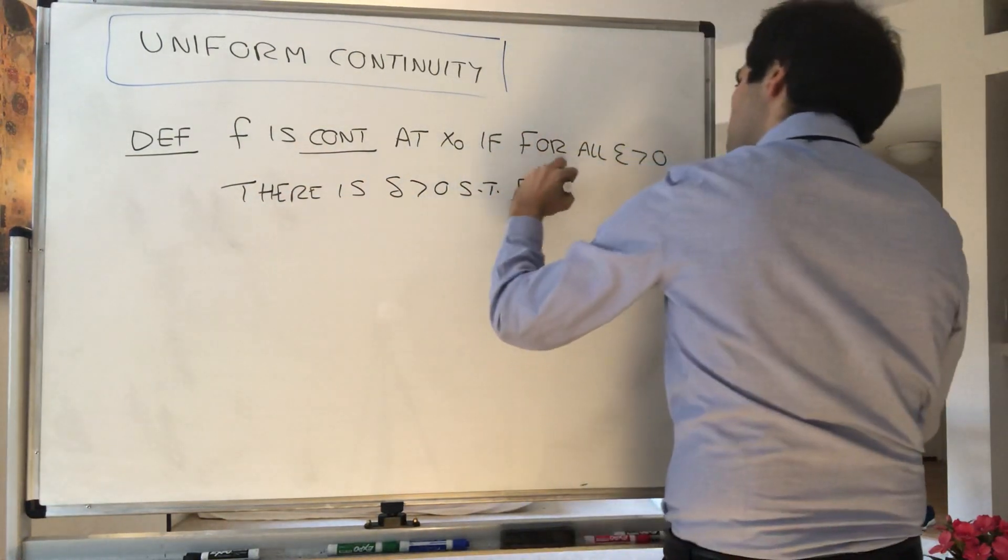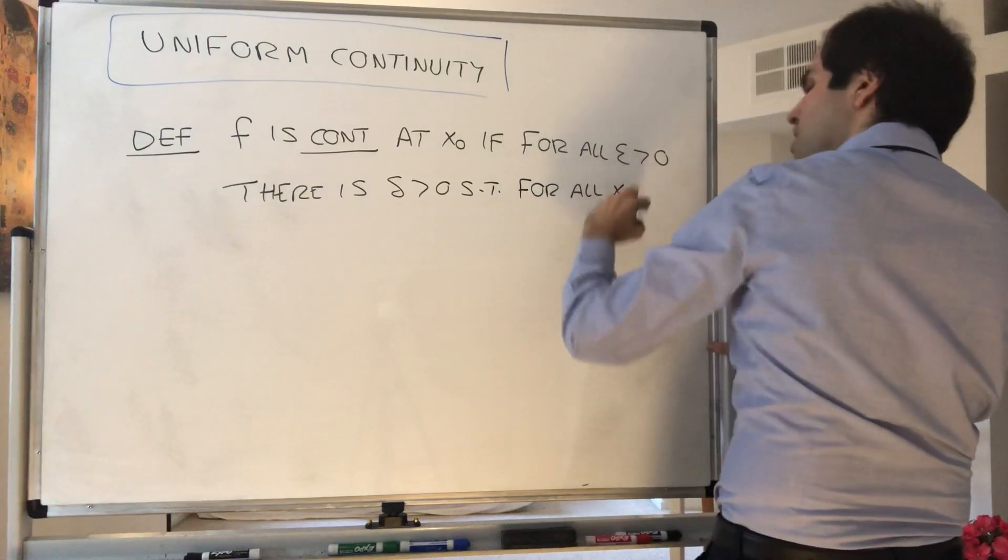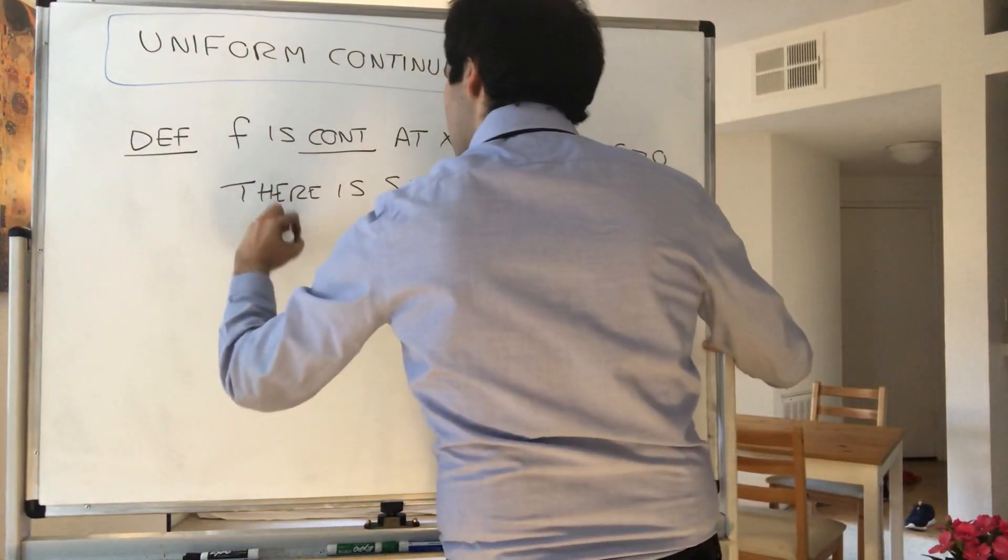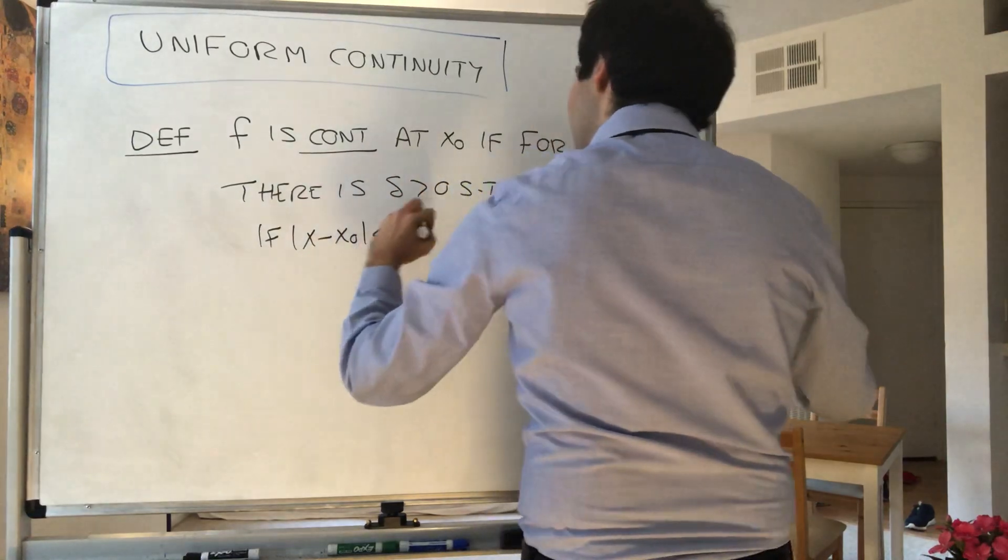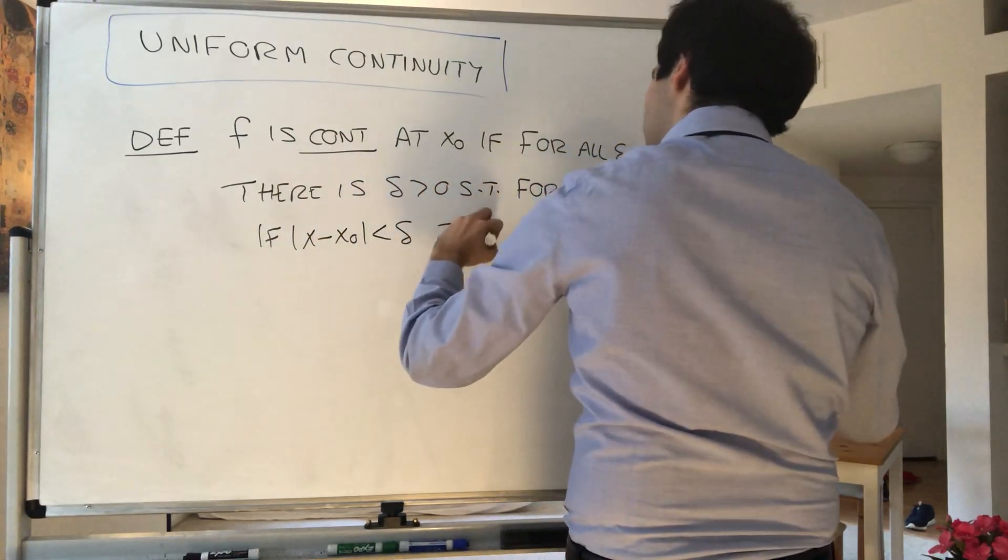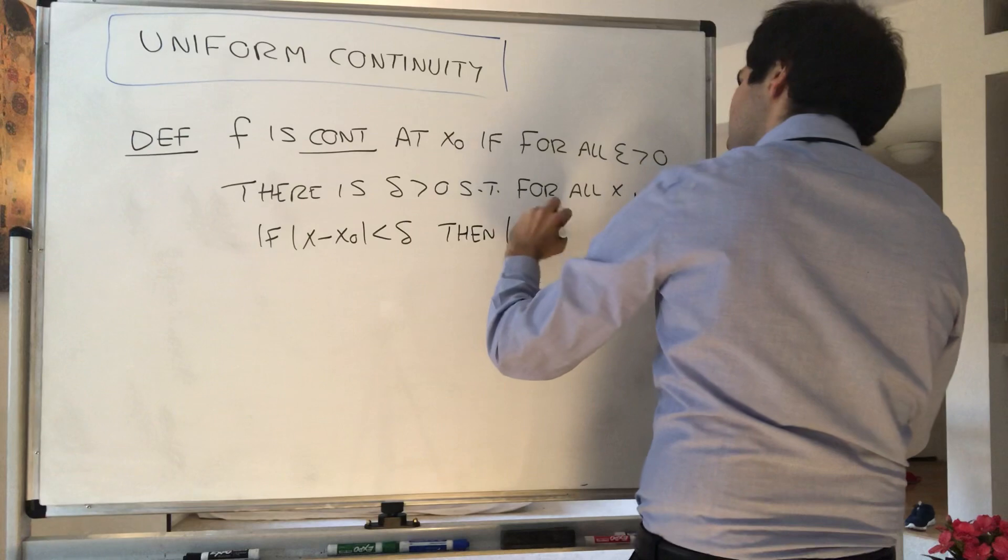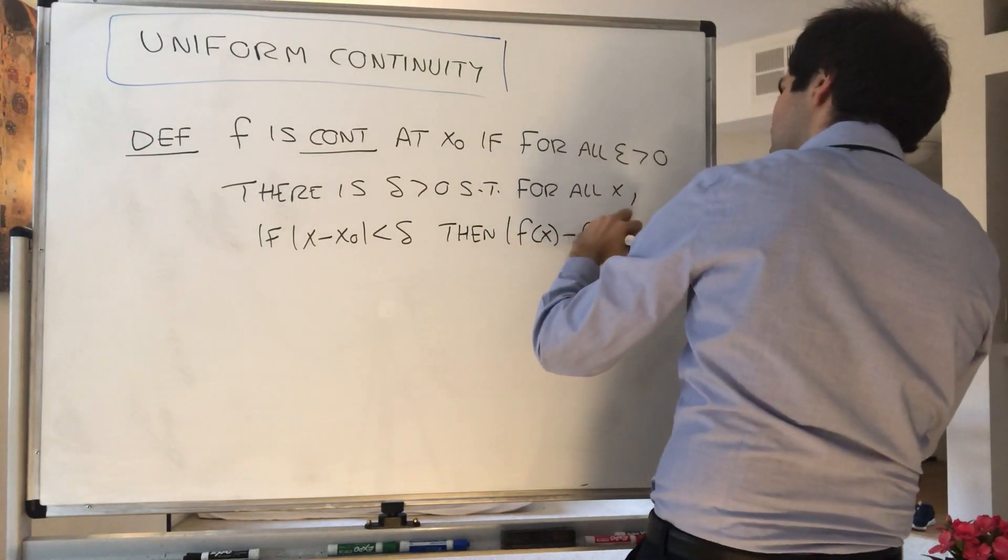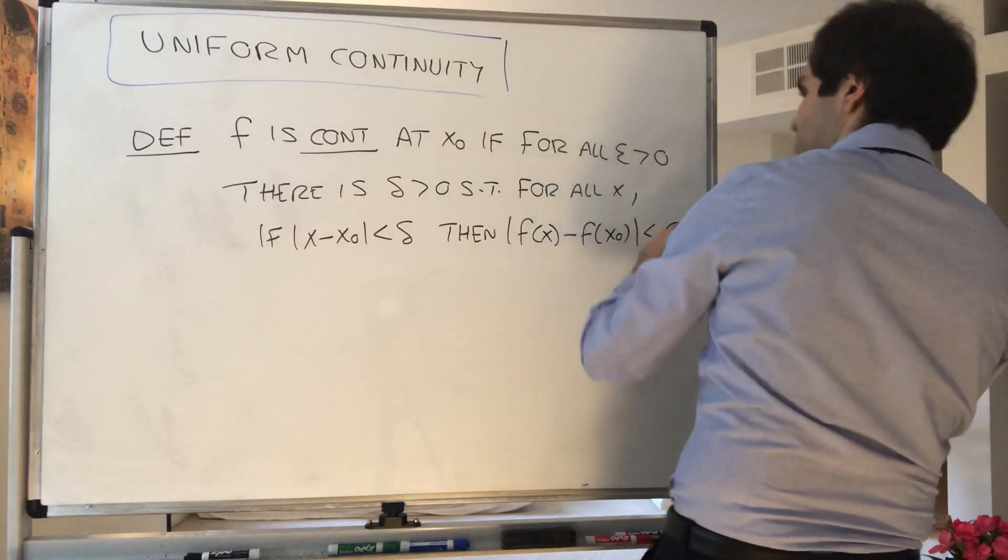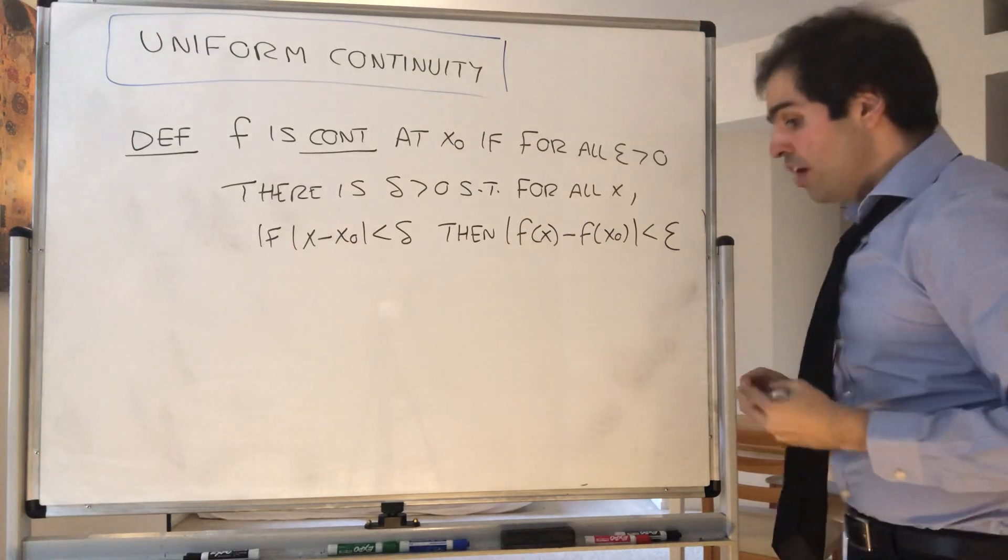If x minus x0 is less than delta, then f of x minus f of x0 is less than epsilon. And now you have to understand...